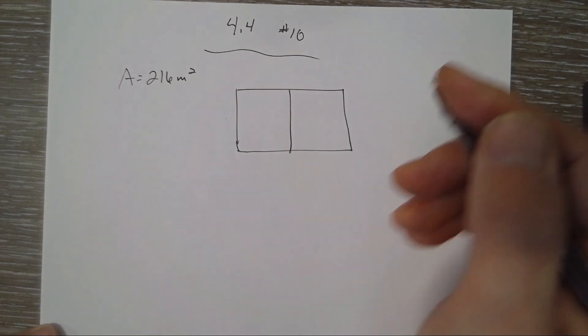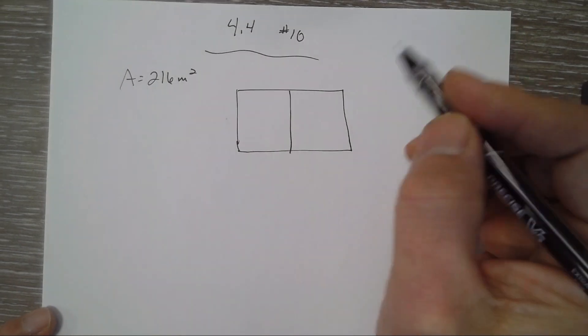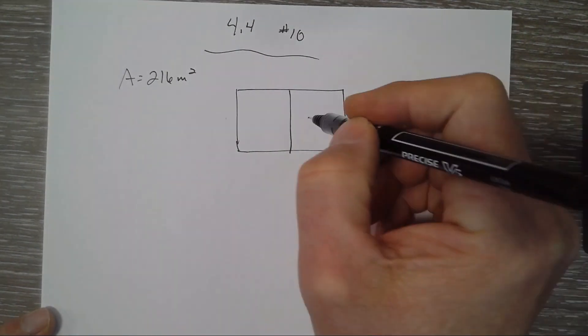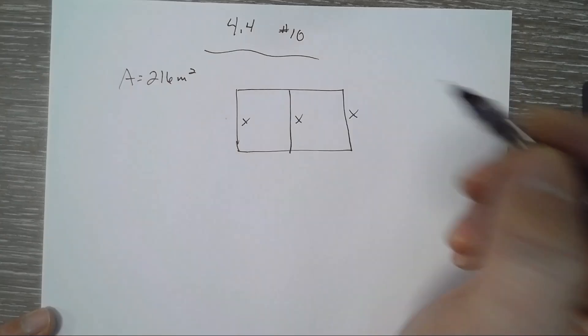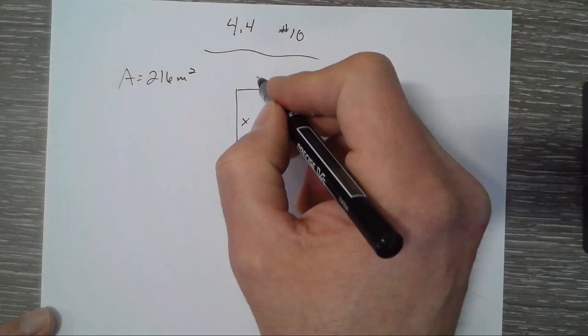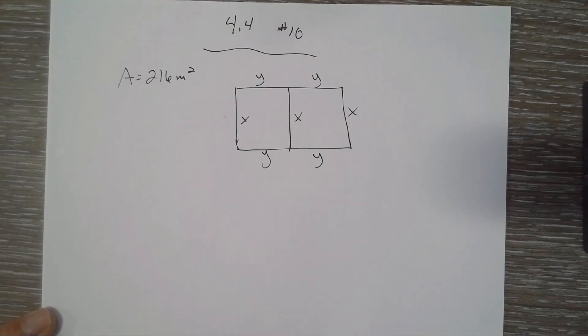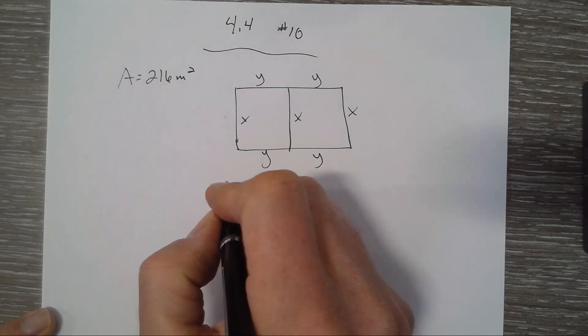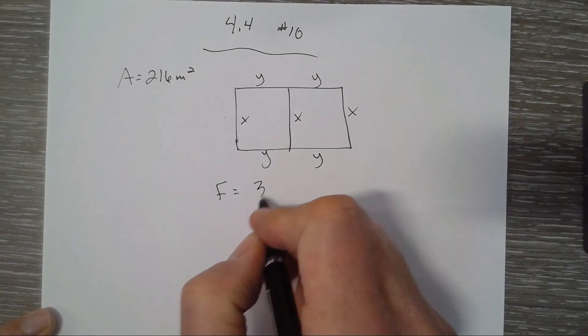So let's define it. We'll call that X, so that means that's X, that's X. If that's Y, then these are all Y also. So our equation, our fence, is 3x plus 4y's.